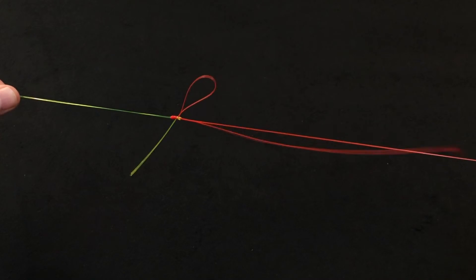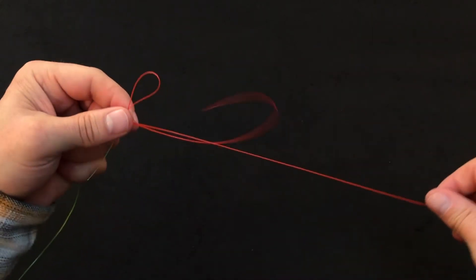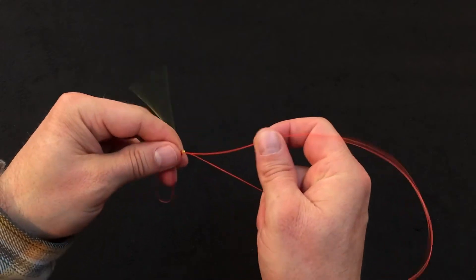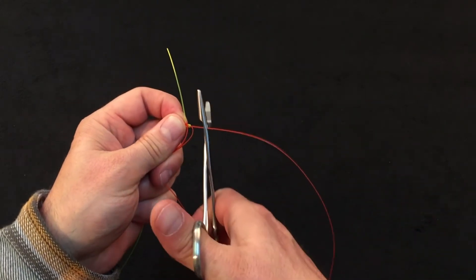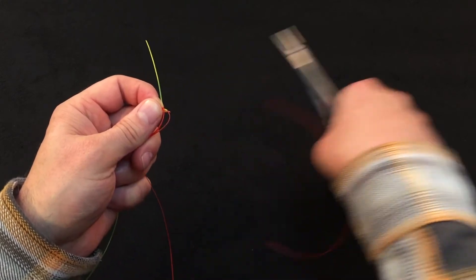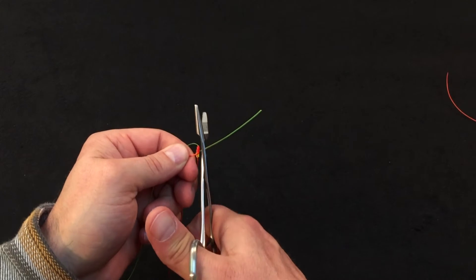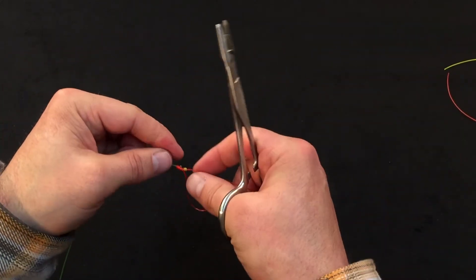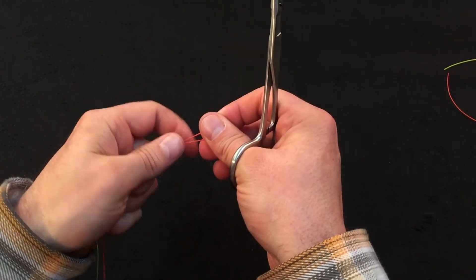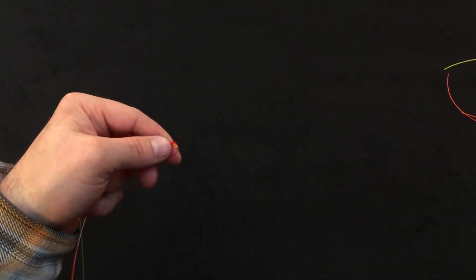So we're going to be left with a number of tag ends that we're going to trim off here. We'll start at the bottom. We're going to trim our long tag end of the smaller material, our heavy material tag end, and our small material tag end.